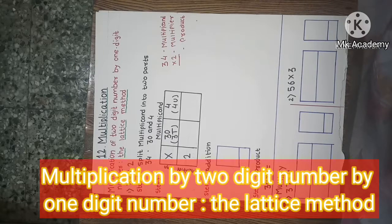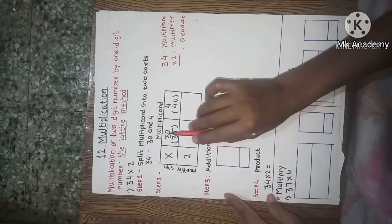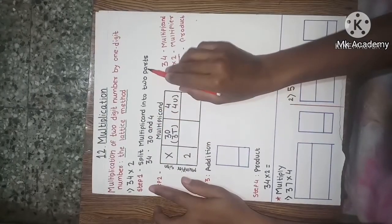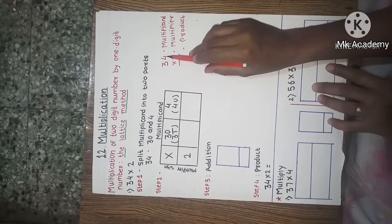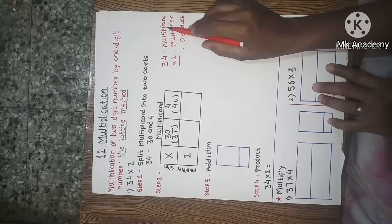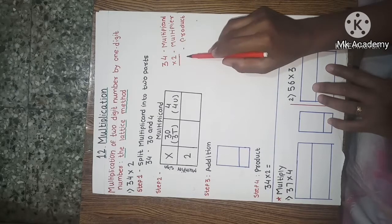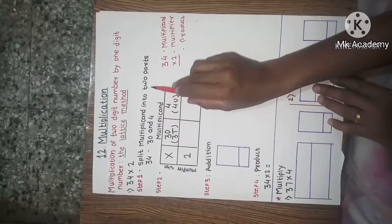Today we are going to learn multiplication of a two-digit number by a one-digit number using the lattice method. The first example is 34 by 2. We will solve this step by step. First, we need to know what multiplicand, multiplier, and product mean. In 34 × 2, 34 is the multiplicand, 2 is the multiplier, and the answer is called the product.